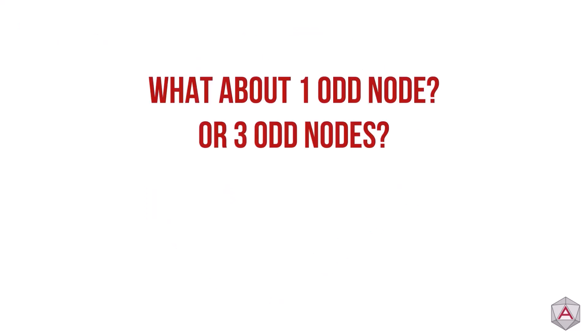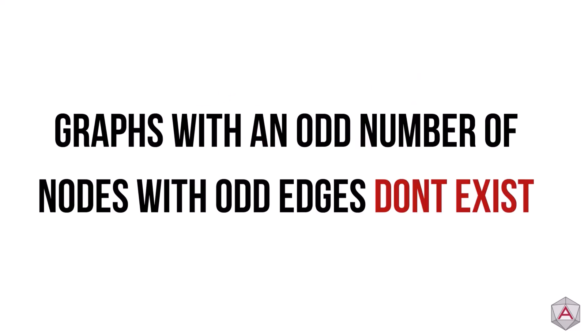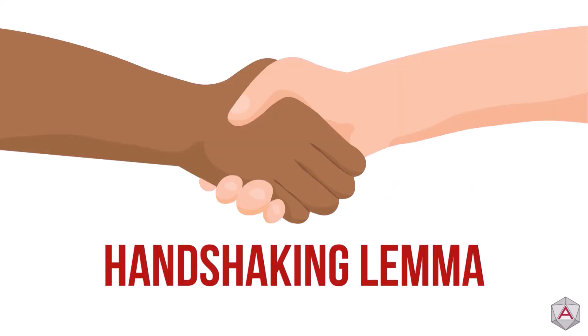But what about graphs with just one odd node, or three? Well, these graphs can't exist. Graphs with an odd number of nodes with odd edges don't exist. In fact, this is a separate famous graph problem called the handshake lemma. Let us know if you'd like us to cover that in a future video of our graph series.